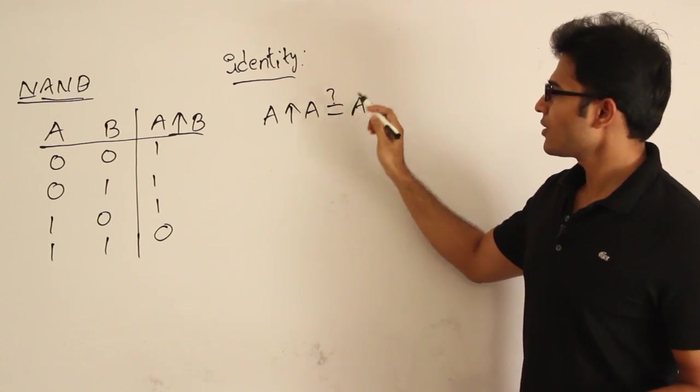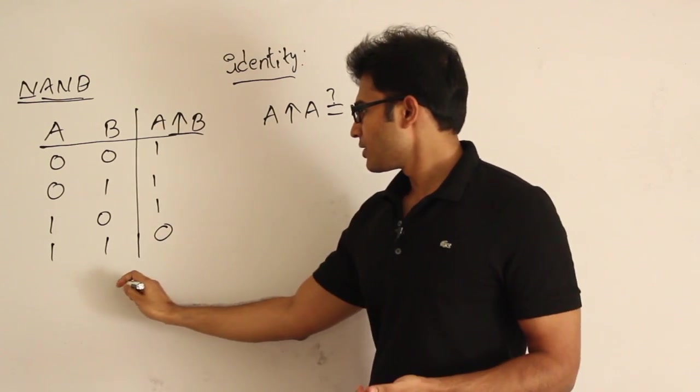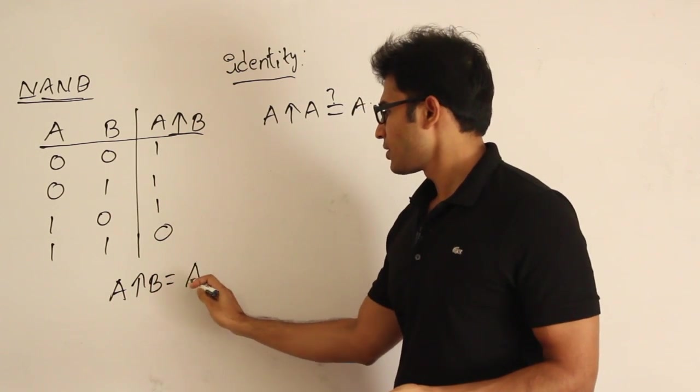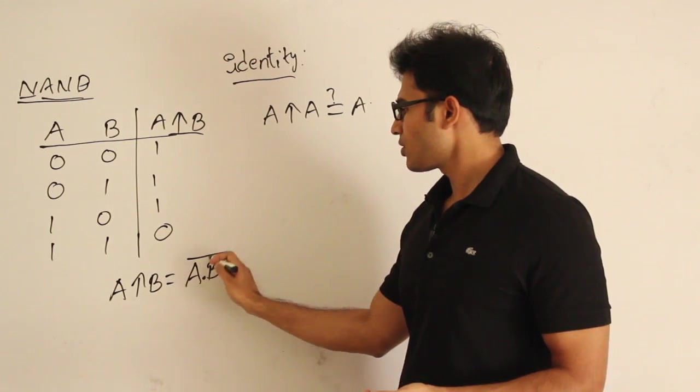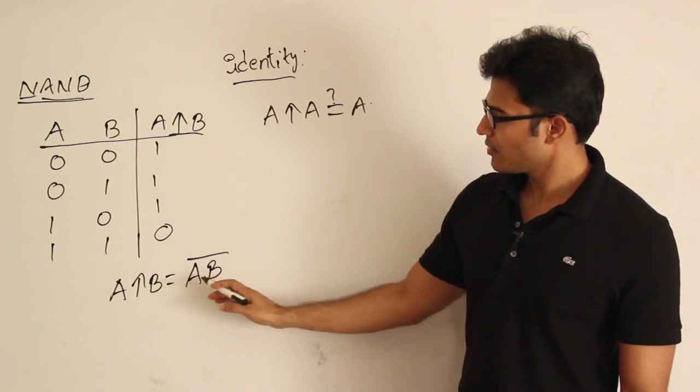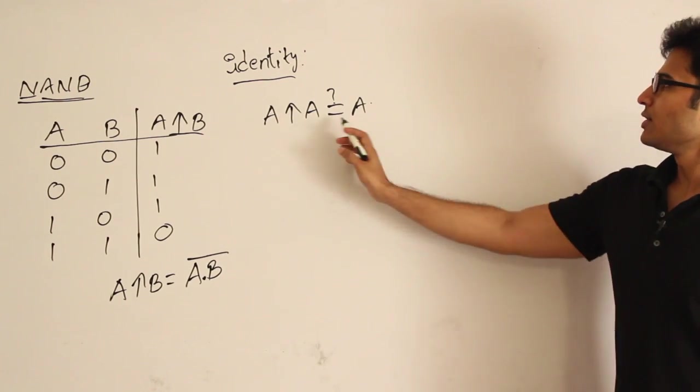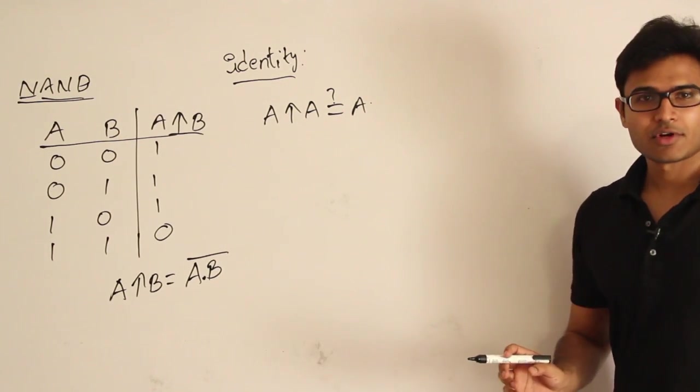One more thing: how to write this. If I have A NAND B, it is nothing but NOT of AND. So A NAND B can be written like this. Now what I want to know is: are these two things equal or not?